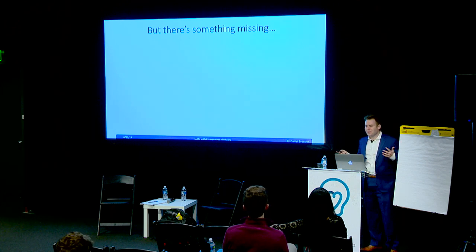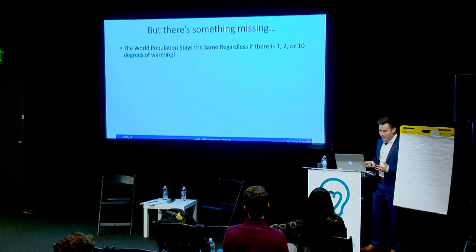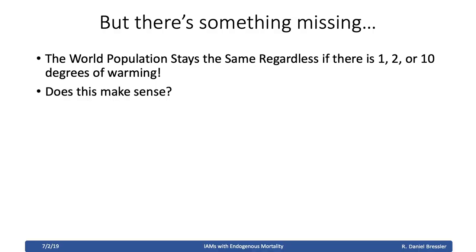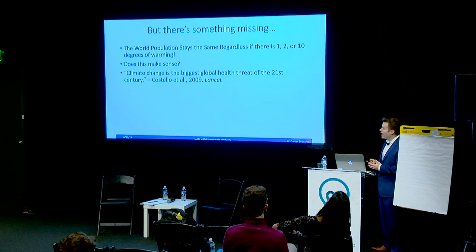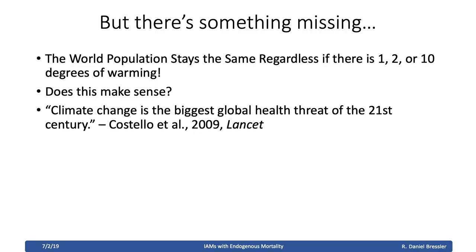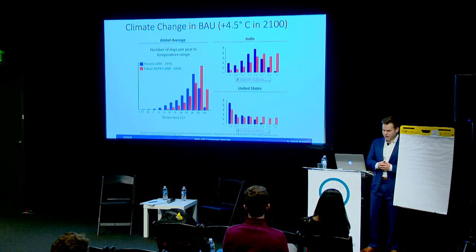But there's something missing with this model: world population stays the same regardless of whether there's one, two, or ten degrees of warming. Does this make sense? A lot of recent literature suggests probably not. A review article in The Lancet suggested that climate change is the biggest global health threat of the 21st century.